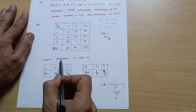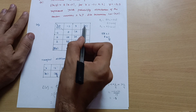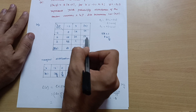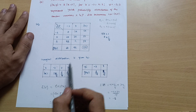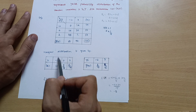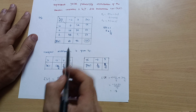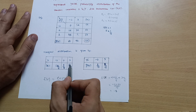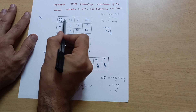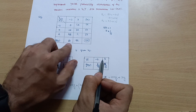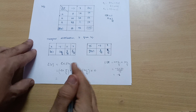Now we can write the marginal distributions. For x, the values are -2, 0, 2 with corresponding f(xi) values of 5k, 5k, 5k — substituting k = 1/15 gives 5/15 each. For y, the values are -2 and 3 with g(yi) values of 6k and 9k, giving 6/15 and 9/15 respectively.